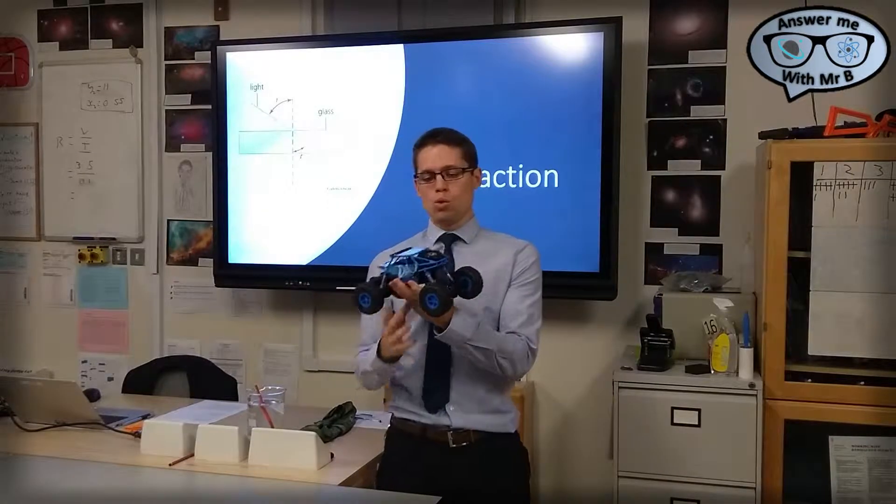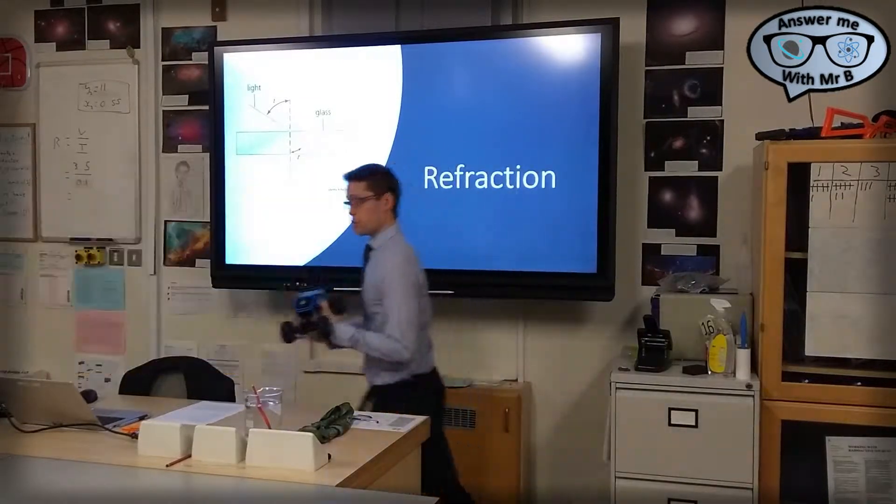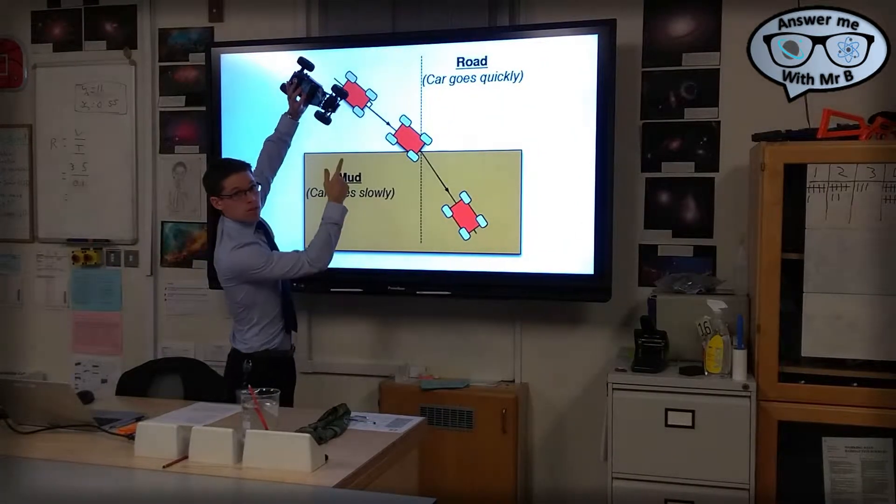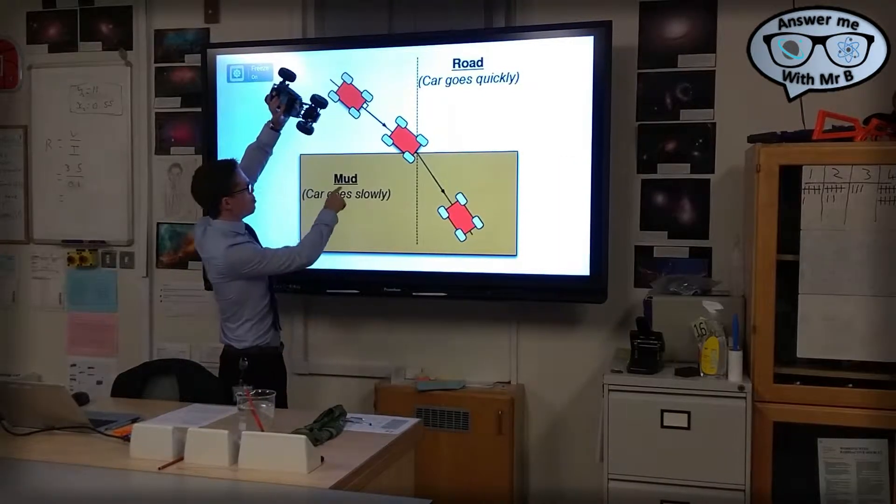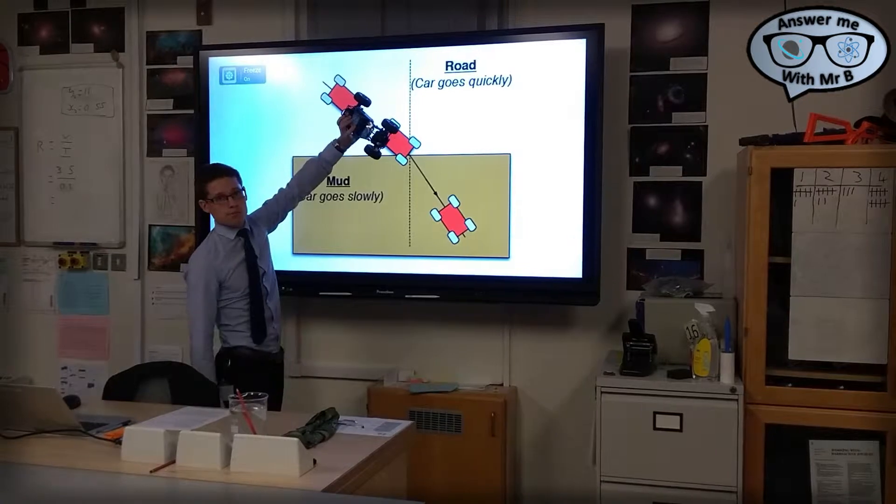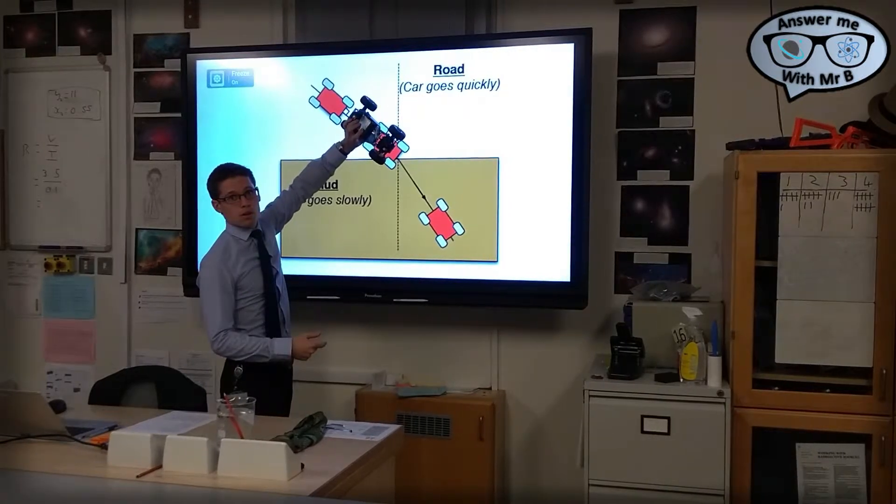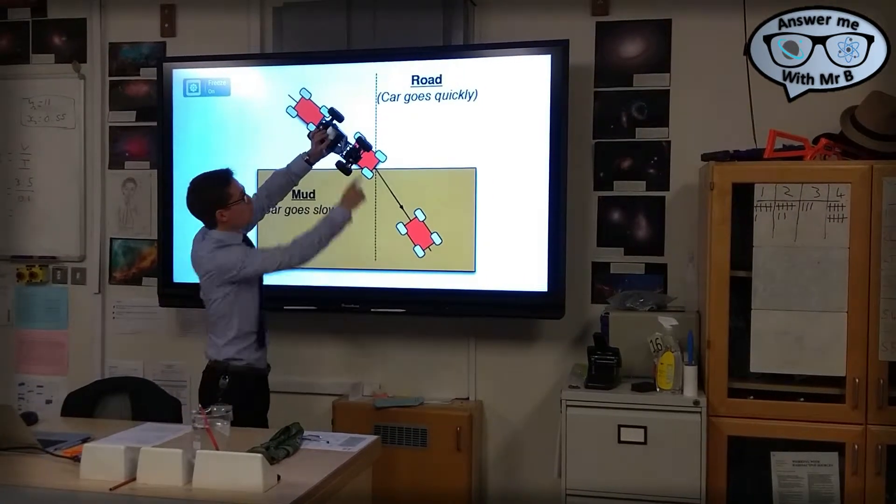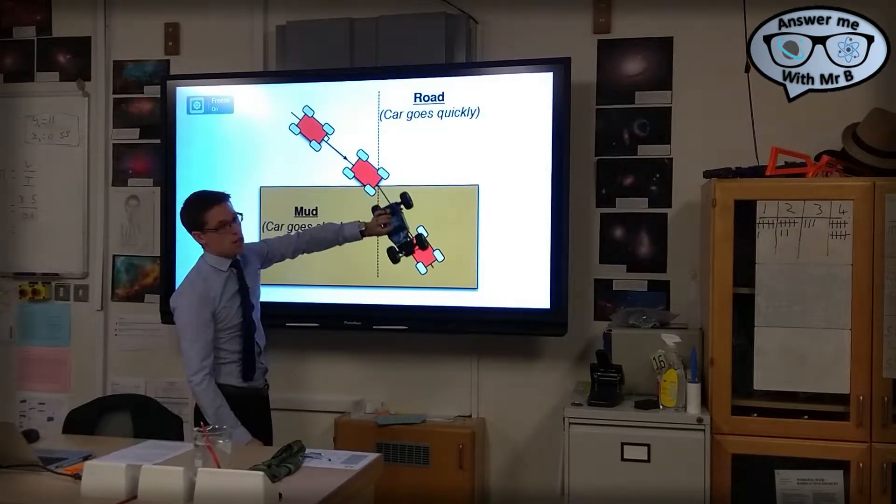So let's imagine you stole your parents' car or monster truck and you decide to take it for a spin. Quite literally. In this case you're going along the road at about 100 miles an hour and you lose control and you head towards the muddy side of the road. In this case the front right tire will hit the mud first and it will slow down because you can't travel as fast in wet mud as you can on the road. However, the front left tire will carry on going at the same speed. It will be going more quickly than that one. And the result of that is that the entire car will change its direction.